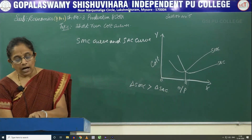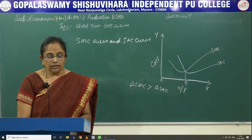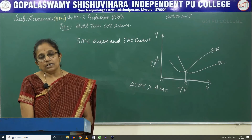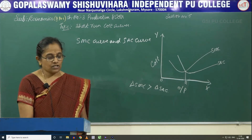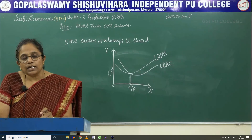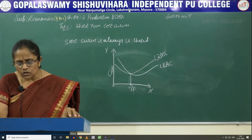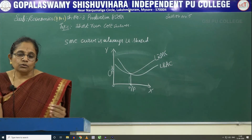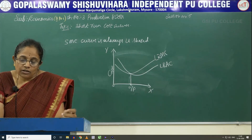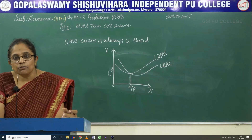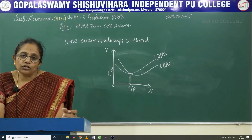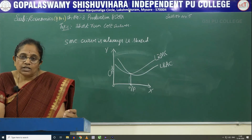Now let us move towards another diagram where the SMC curve is always expressed in the shape of U. You know there are 7 short-run costs and 3 long-run costs. With this we come to the end of this lesson, and in our next session we are going to learn about the fourth lesson.